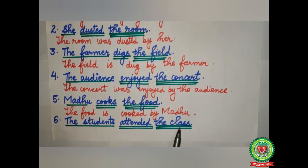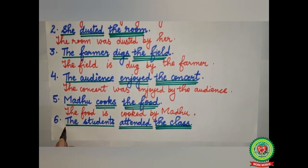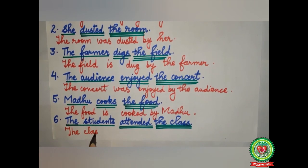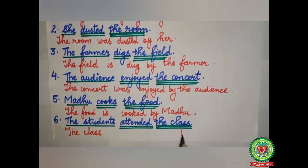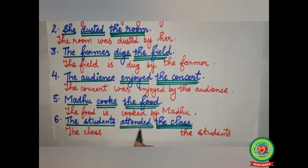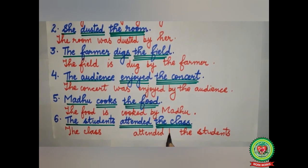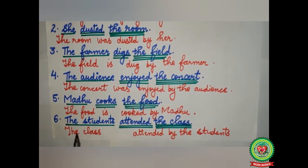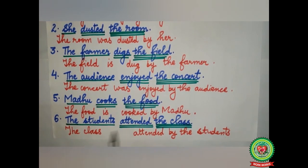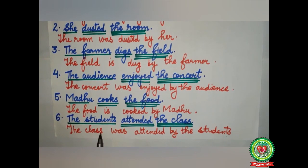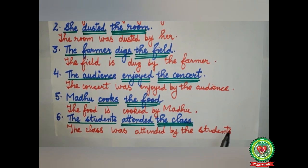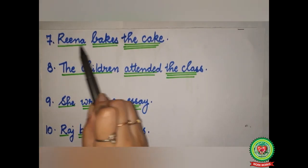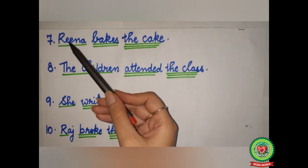The class will come in the beginning, the students will go to last. 'Attended' is already in its V3 form so it will remain 'attended.' Before the students we add 'by.' 'Attended' is past form of verb, so with the class we add 'was.' The sentence becomes: 'The class was attended by the students.'